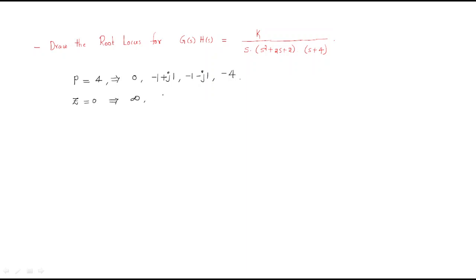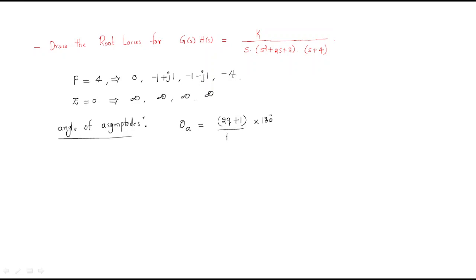Since there are no zeros, we have four asymptotes corresponding to four infinite zeros. We need to find the angles of the asymptotes. The formula for the angle of asymptotes is: theta_a = (2q + 1) times 180 divided by (poles minus zeros), where q equals 0, 1, 2, 3.